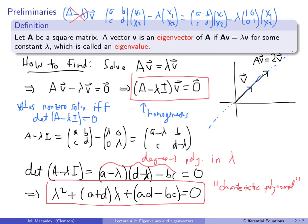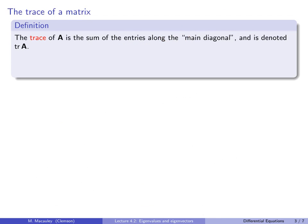Notice what these terms are: the constant term (ad minus bc) is the determinant of the matrix, and the coefficient of Lambda is the sum of the entries on the main diagonal. Let's give a name to this. The trace of a matrix is the sum of the entries along the main diagonal, denoted tr(A). For a 2×2 matrix, the trace is just the sum of the diagonal entries.